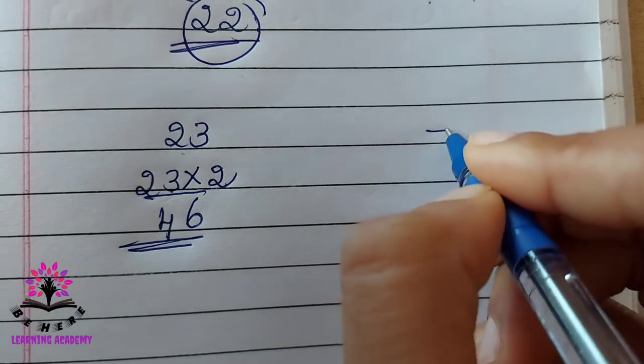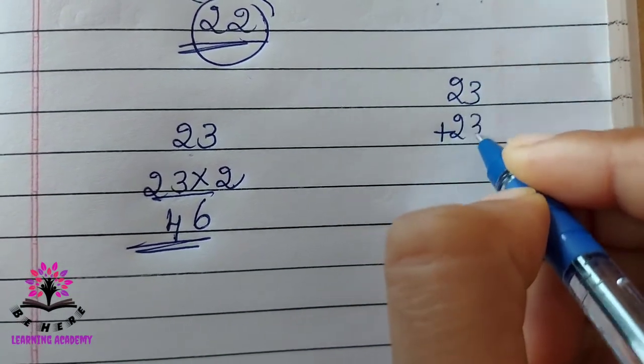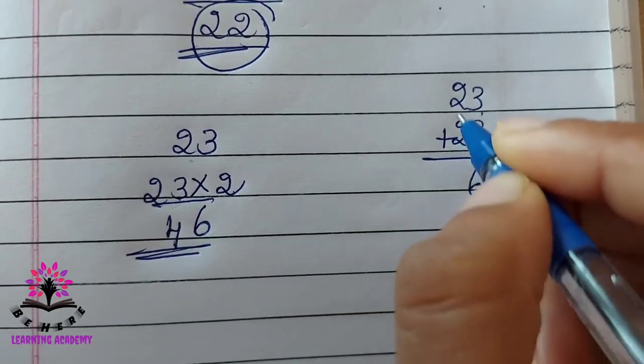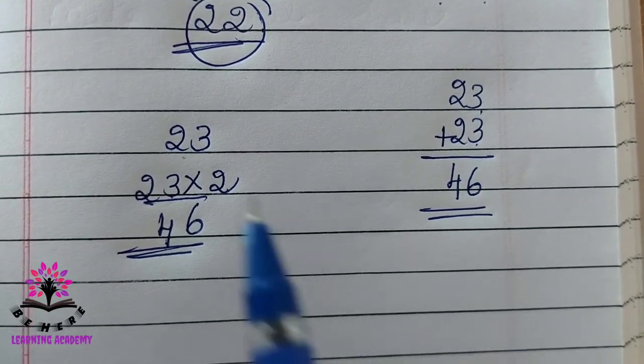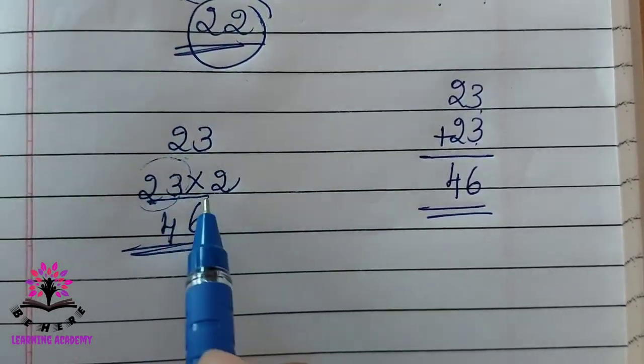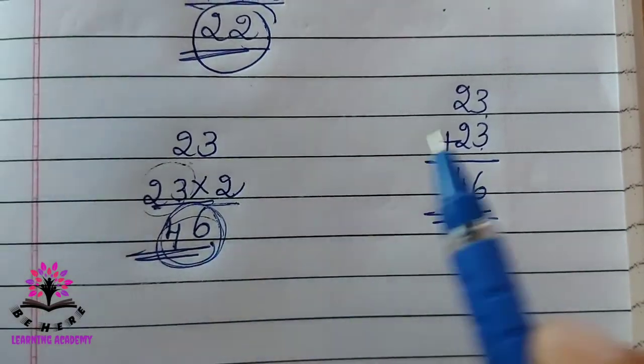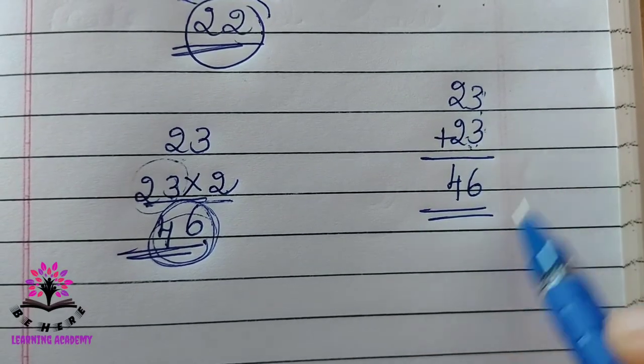If you have to use addition then what you have to do, 23 plus 23. You have to add the same number 3 plus 3 is 6, 2 plus 2 is 4. Your answer is 46. When we multiply the given number by 2 then it becomes double, or when we add the same number to itself it gets doubled.